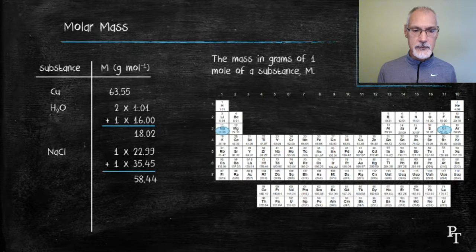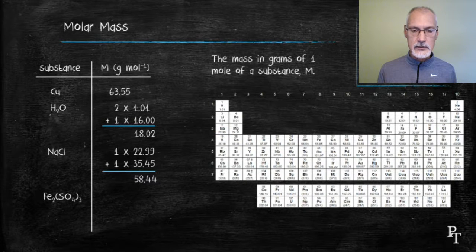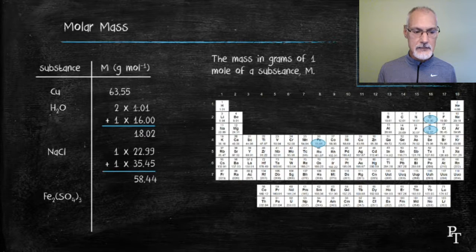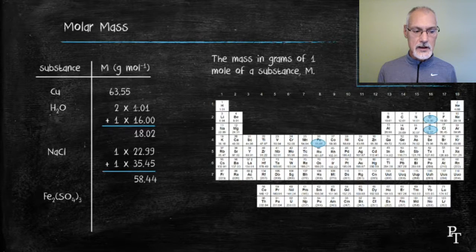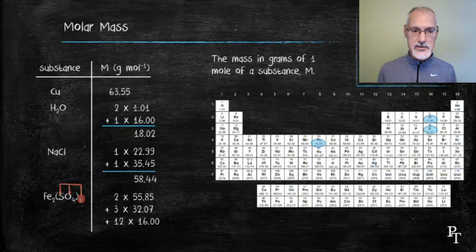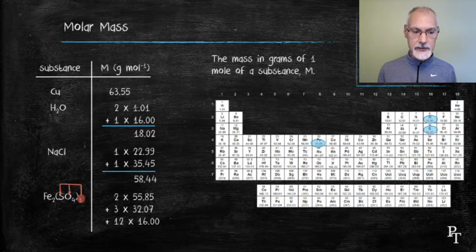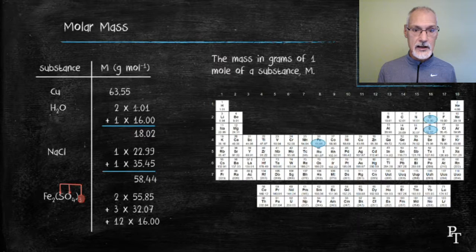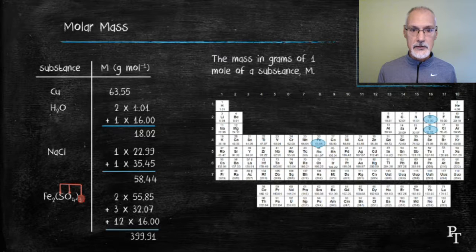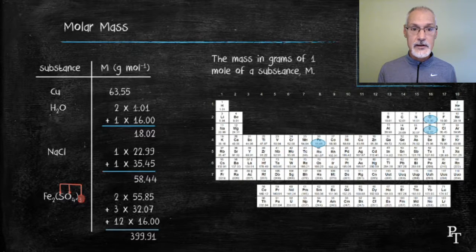And likewise with my iron sulfate. Again, I'll locate iron, sulfur, and oxygen, and determine the number of atoms that I have of each. So from the subscript 2, 2 times the iron, the 3 is distributed both amongst the sulfur and the oxygen, hence 3 sulfurs and 12 oxygens. I total up that mass. So 1 mole of iron 3 sulfate would have a mass of 399.91 grams.